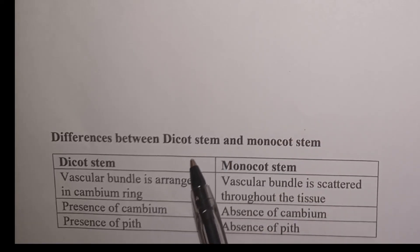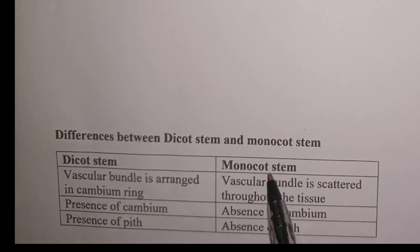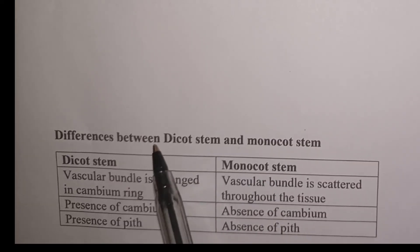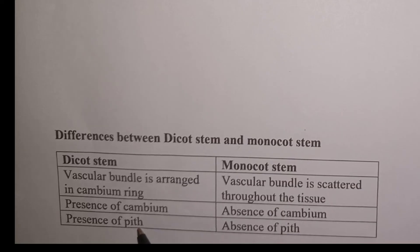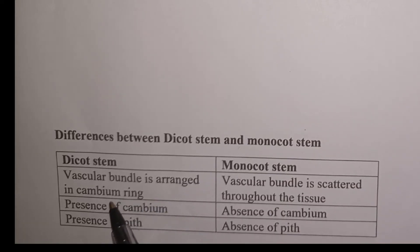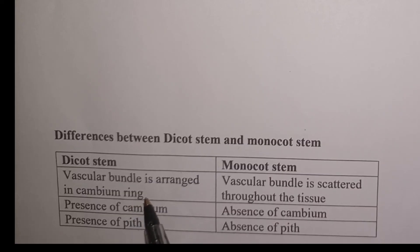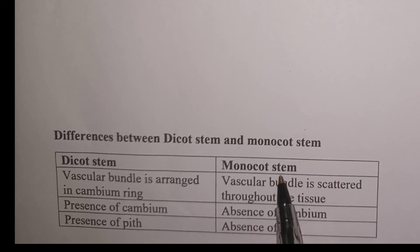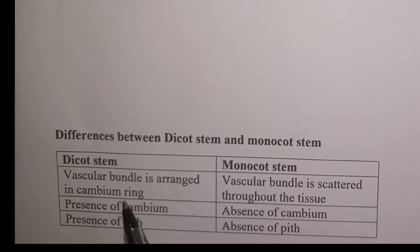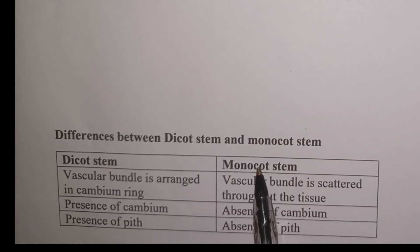Now the differences between dicot stem and monocot stem, which is common in both PEP 1 and PEP 2 biology. The differences are based on: number one, the vascular bundle — in dicot stem it is arranged in a cambium ring, with xylem towards the inside of the pith and phloem towards the outside; in monocot stem the vascular bundle is scattered all over in the ground tissue. Number two, cambium is present in dicot stem but absent in monocot stem. Number three, pith is present in dicot stem but absent in monocot stem.